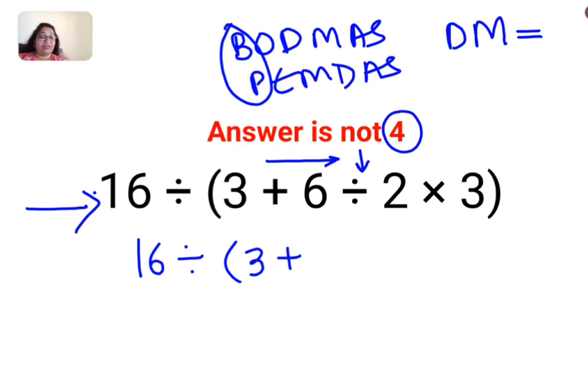So first we'll do 6 divided by 2, which is 3, multiplied by 3 again. 16 will be kept as it is and divided by 3 plus 3 multiplied by 3, that is 3 plus 9.